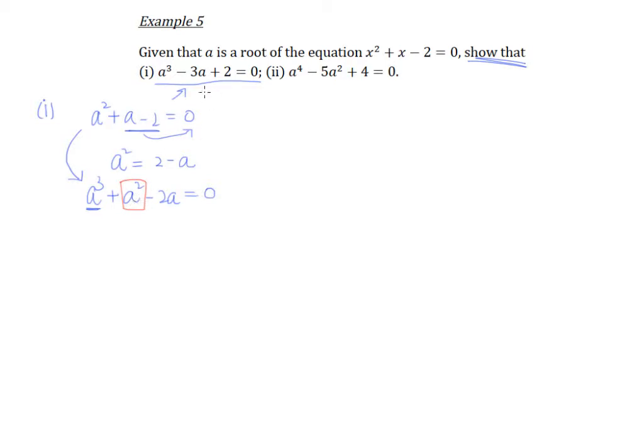So a squared, we need to get rid of this because there's no a squared here. And what we know from this particular equation is that a, a squared looks like 2 minus a. So what we're going to do is we're going to substitute in this a squared, okay, as 2 minus a. Okay, so this used to be where the a squared was. And now it becomes like this, and if we were to simplify this,